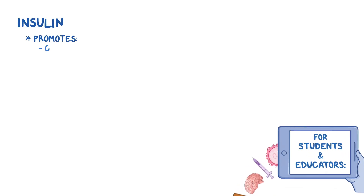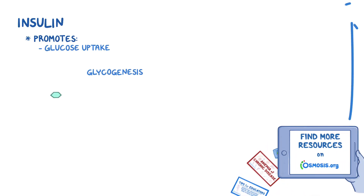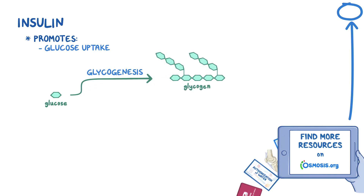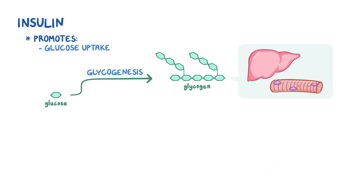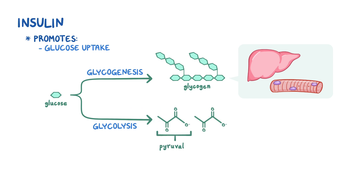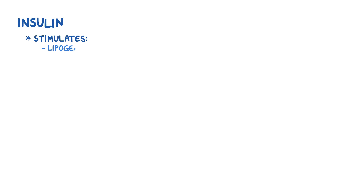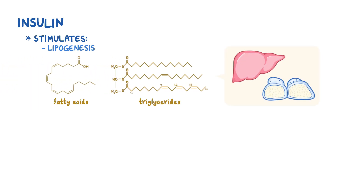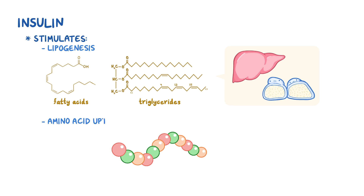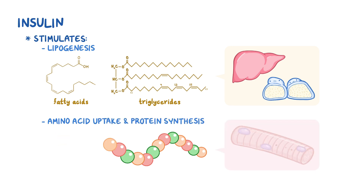Insulin promotes glucose uptake and glycogenesis, which is the conversion of glucose to glycogen. Glycogenesis is the process that takes place in the liver and skeletal muscles. When glycogen storage capacity is reached, insulin promotes glycolysis, which is the breakdown of glucose to pyruvate. It also stimulates lipogenesis, the synthesis of fatty acids and triglycerides in the liver and adipose tissue, and amino acid uptake and protein synthesis in skeletal muscles.